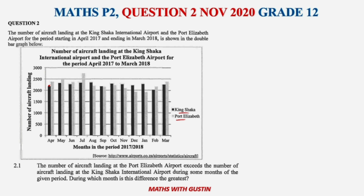Question 2.1 says: the number of aircrafts landing at Port Elizabeth exceeds the number landing at King Shaka International Airport during some months. During which month is this difference the greatest? Looking at the graph, you can see that in most months the difference is not large, but in one month there is a huge difference — Port Elizabeth has a very high number while King Shaka has a low number. The answer is July 2017.